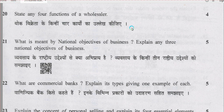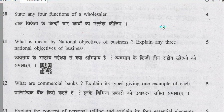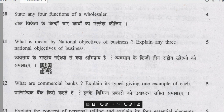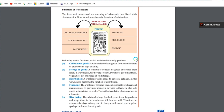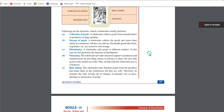Question number 20: state any four functions of a wholesaler. A wholesaler is an important middleman in the chain of distribution who buys goods in bulk from the producer and sells in relatively smaller quantities to retailers. Functions include: collection of goods, financing, storage of goods, risk-taking, distribution, and grading. You can read this on page number 197, chapter number 13.